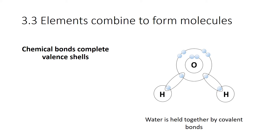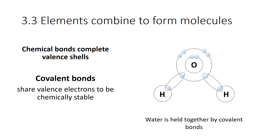Elements combine to form molecules by making chemical bonds to complete the valence shell. Looking at water, it is one atom of oxygen and two atoms of hydrogen, held together by what's called a covalent bond — they're sharing electrons. When they do that, they become chemically stable. Oxygen needs eight electrons total to be chemically stable, and it only needs two more to complete its octet. Hydrogen only has one electron and needs one more. So by sharing their unpaired electrons, they form that covalent bond, which is fairly strong, and in doing so they have formed water.